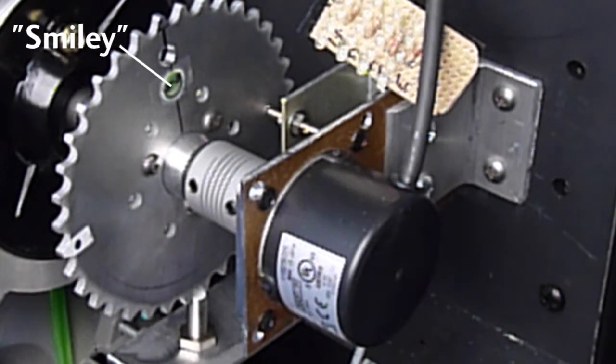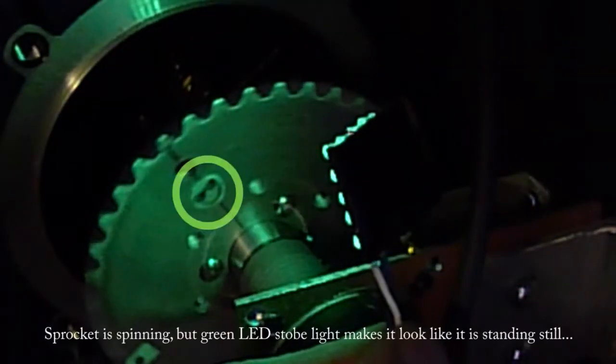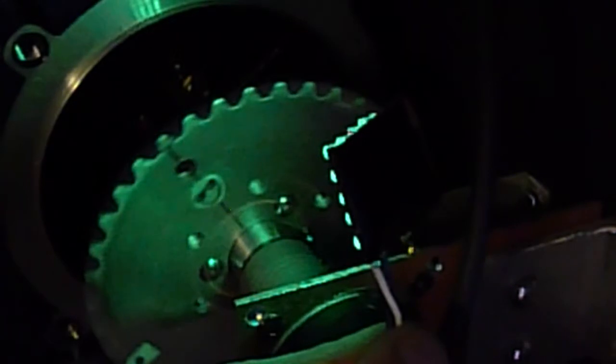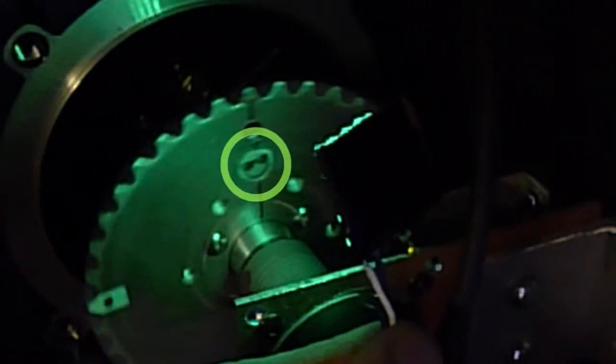We added a little AutomationDirect smiley face to mark the index hole location. When we run the motor we get a timing light effect that appears to freeze the sprocket while the motor runs at high RPMs. By changing the delay, we freeze the sprocket at different locations.